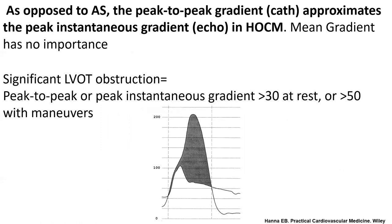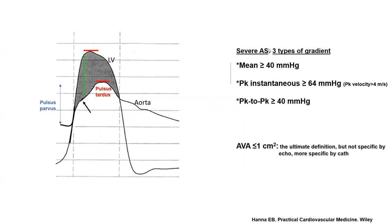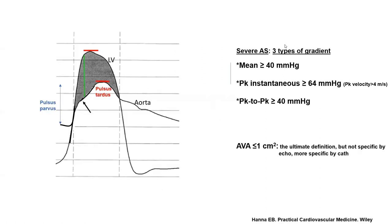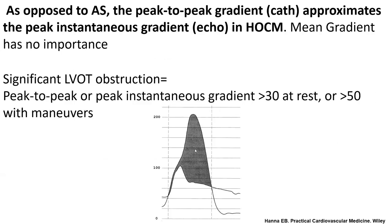An important hemodynamic feature of dynamic LV-OT obstruction: what gradient do we use in HOCM? In aortic stenosis we have three types of gradient with different cutoffs, but in HOCM we do not use mean gradient. Mean gradient, which is the most important gradient in severe AS, has no value physiologically in HOCM. When we talk about gradient in HOCM, we are talking about peak-instantaneous gradient by echo and peak-to-peak gradient by cath. We don't talk about mean gradient because the obstruction is mainly mid-to-late systole.